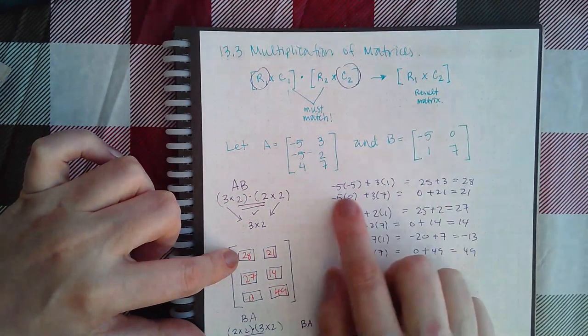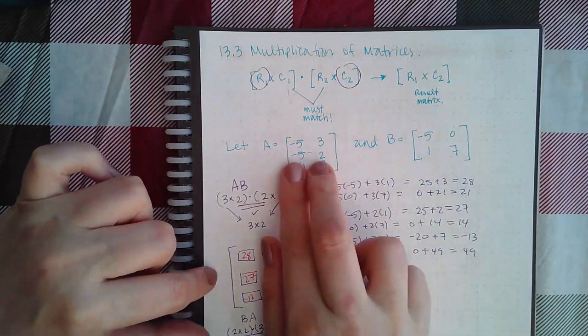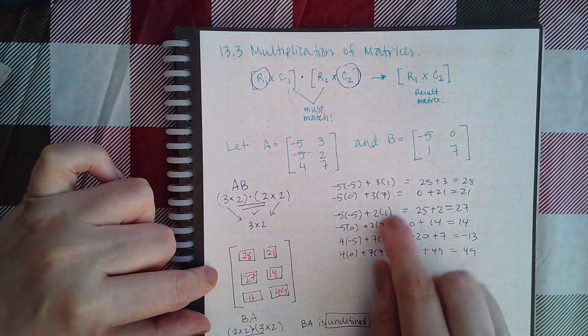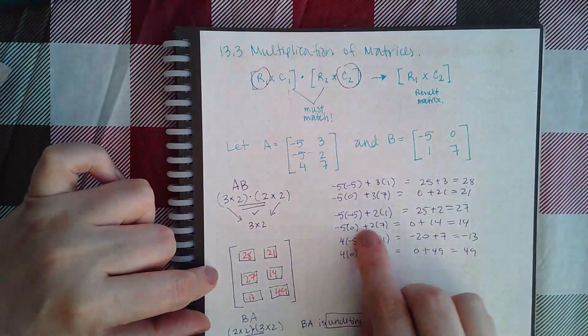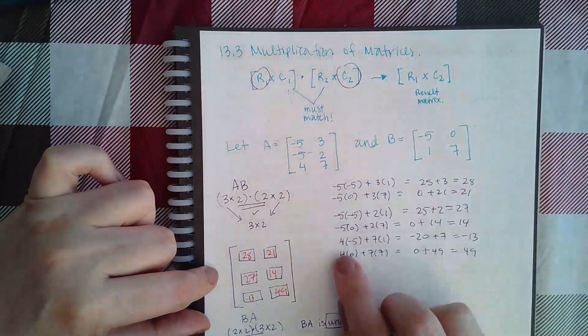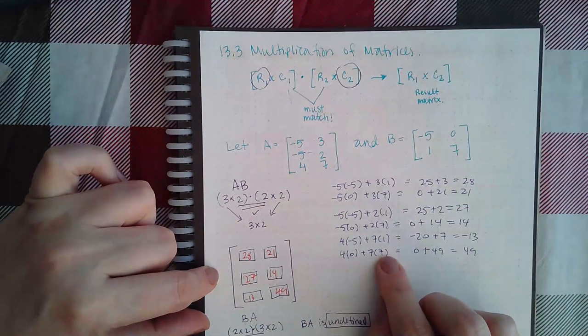Take the second row times the first column, you've got that worked out here. Second row times the second column, we've got that worked out here. The third row times the first column, that's here. Third row times the second column, that's here.